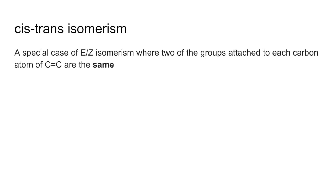Quick revision video on cis-trans isomerism. So cis-trans isomerism is a special case of E/Z isomerism where two of the groups attached to each carbon atom of the carbon-carbon double bond are the same.